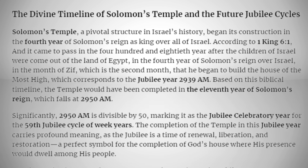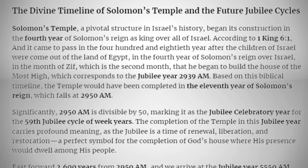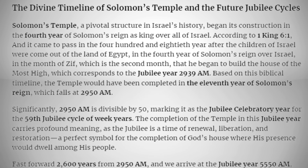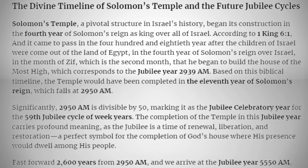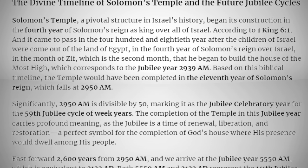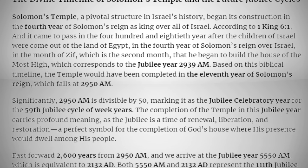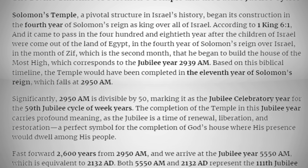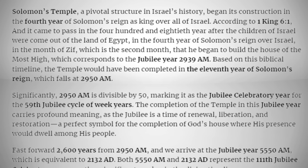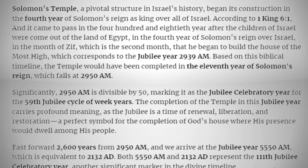Solomon's Temple, a pivotal structure in Israel's history, began its construction in the fourth year of Solomon's reign as king over all of Israel. According to 1 Kings 6:1: "And it came to pass in the 480th year after the children of Israel were come out of the land of Egypt, in the fourth year of Solomon's reign over Israel, in the month of Zif, which is the second month, that he began to build the house of the Most High," which corresponds to the jubilee year 2939 AM. Based on this biblical timeline, the temple would have been completed in the 11th year of Solomon's reign.